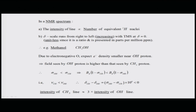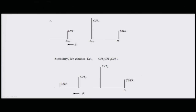The δ scale runs from right to left with TMS at δ = 0; it is unitless (a ratio) presented in parts per million. For methanol, due to the electronegative oxygen, electron density is smaller near the OH proton, so the field seen by the OH proton is higher than that seen by the CH₃ proton. This gives rise to the expected result: the intensity of the CH₃ line is roughly three times the intensity of the OH line.